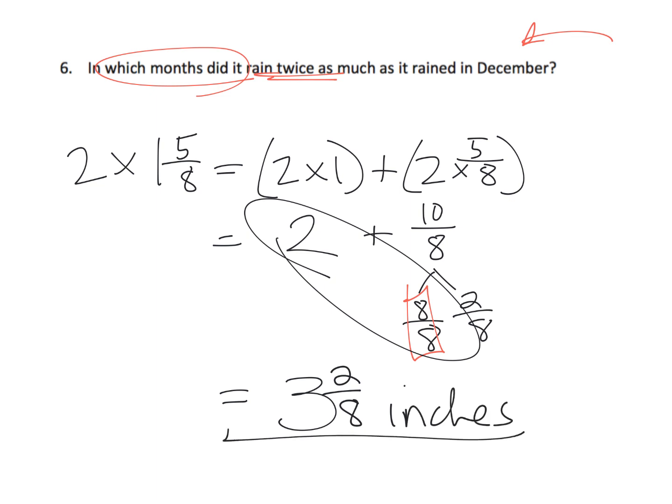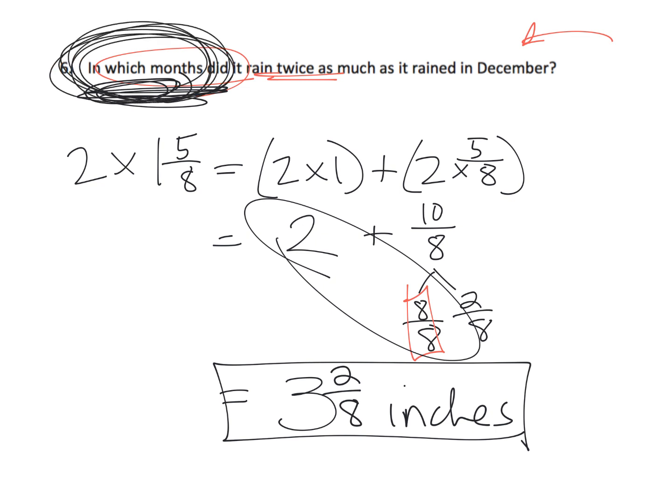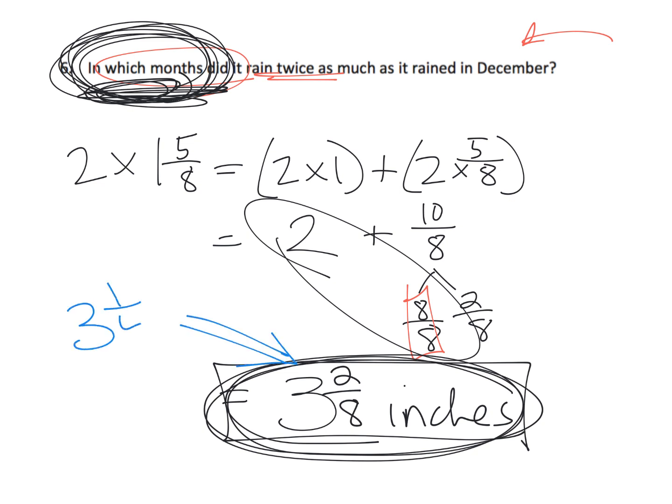So now what we need to do, I'm not going to do that, but we need to go back and look at our list and look at which months had three and two-eighths inches of rain. Keep in mind though, three and two-eighths is also equal to three and a quarter inches. So you might need to look at months that have three and a quarter inches as well.